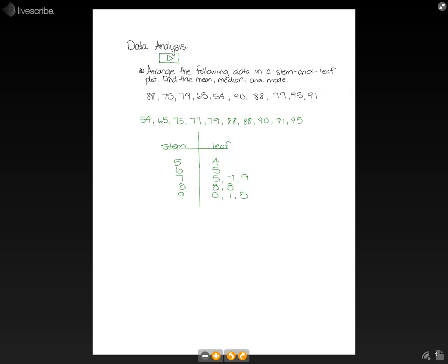So that's how we do a basic stem and leaf plot. They're asking us to find the mean, the median, and the mode. The mean is what we sometimes call the average. For the mean, the best way is to add up all our numbers and divide by the total number of numbers. If we add this together, we get 802, and since we have 10 numbers, we divide it by 10, giving us a mean of 80.2.